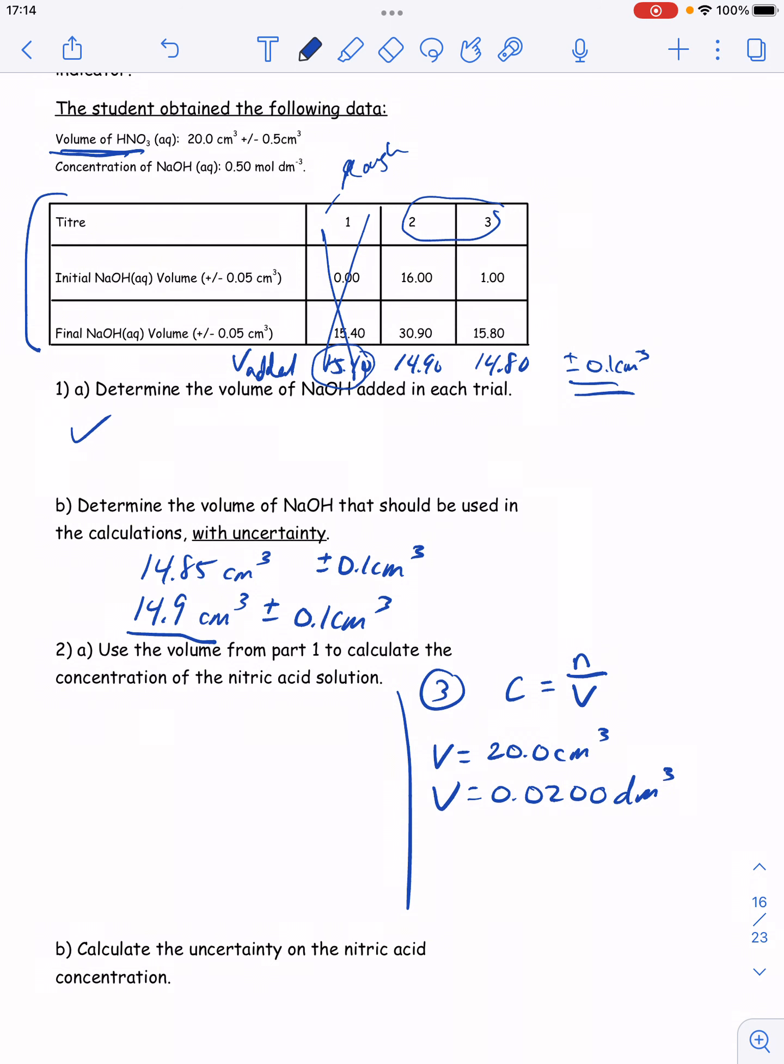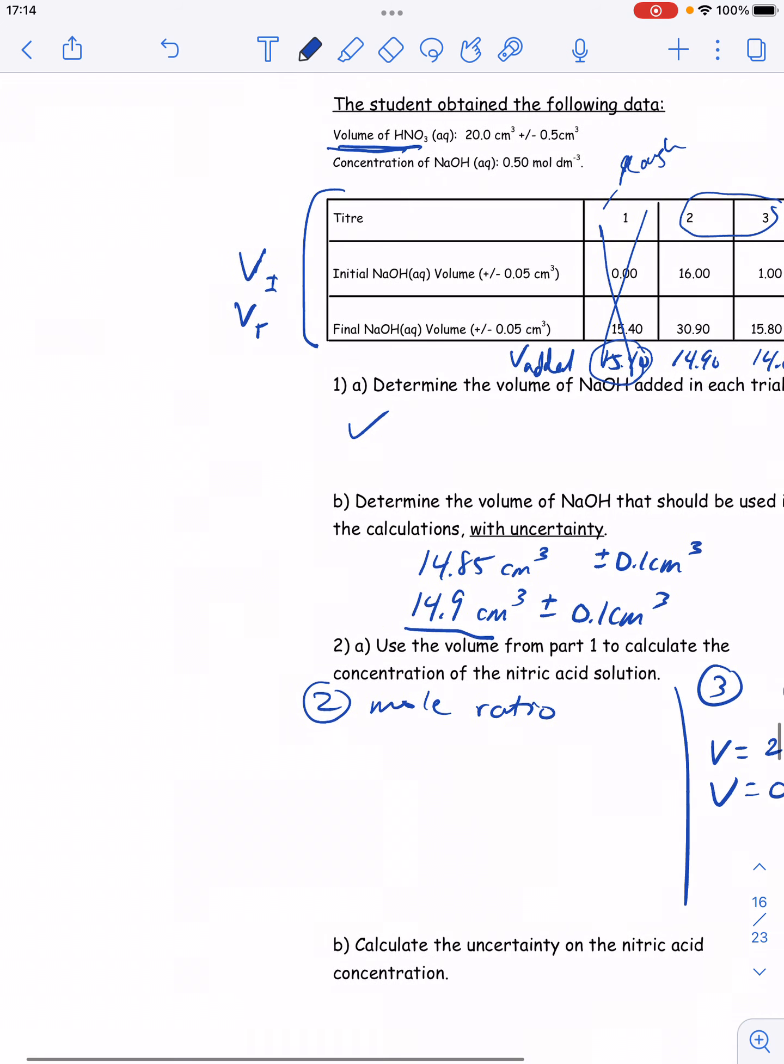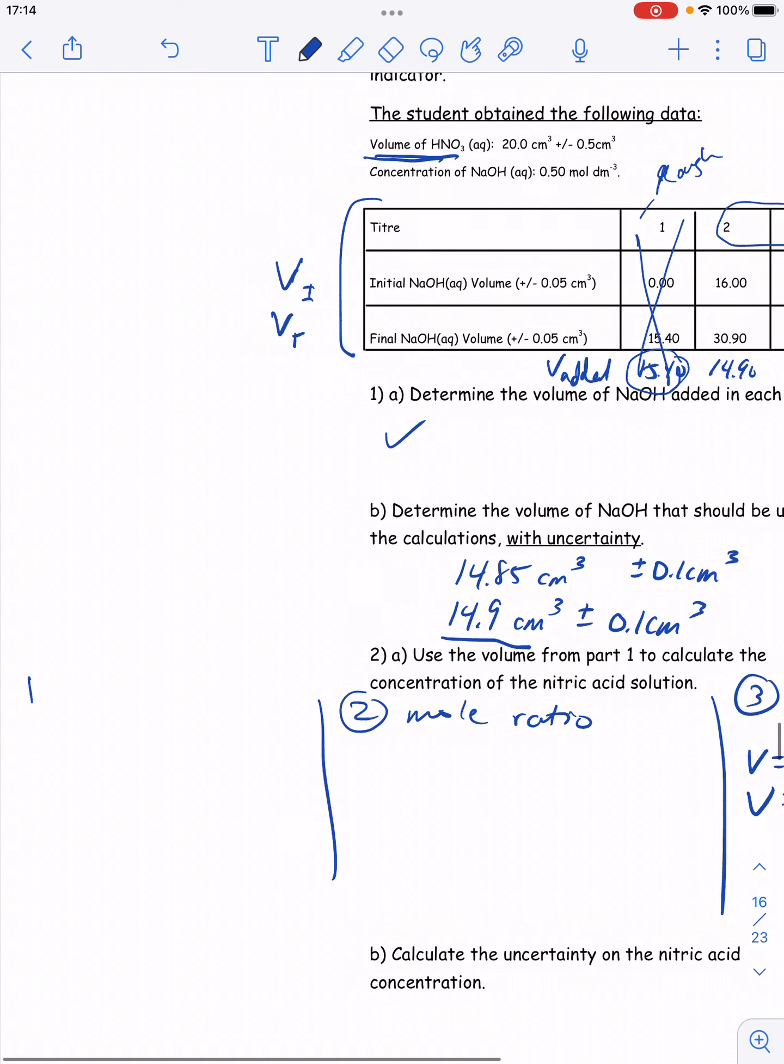So I know the volume. I don't know the moles yet. The second step of our stoichiometry questions is usually a mole ratio step. And so my first step is usually converting into moles.